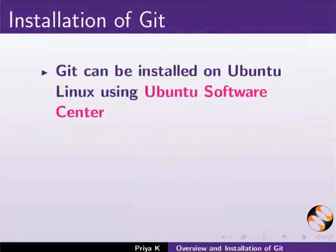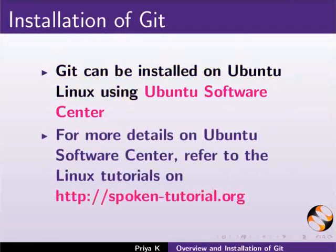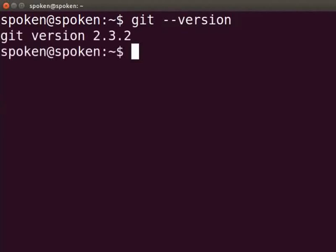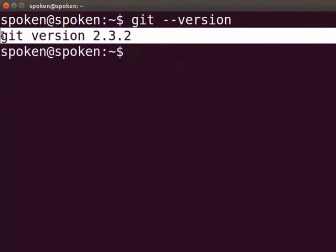Git can be installed on Ubuntu Linux using Ubuntu Software Center. For more details on Ubuntu Software Center, we will refer to the Linux tutorials on this website. I have already completed the installation of Git on my system. To verify, go to the terminal and type 'git --version' and press Enter. We can see the version number of Git displayed, which means Git is installed successfully.